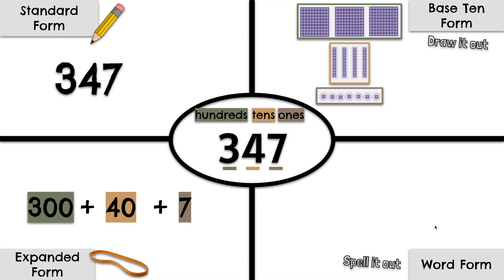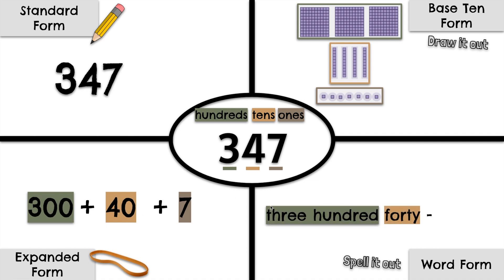Now let's show this number in word form. Let's spell it out. Three hundred forty-seven. Put it together: three hundred forty-seven.